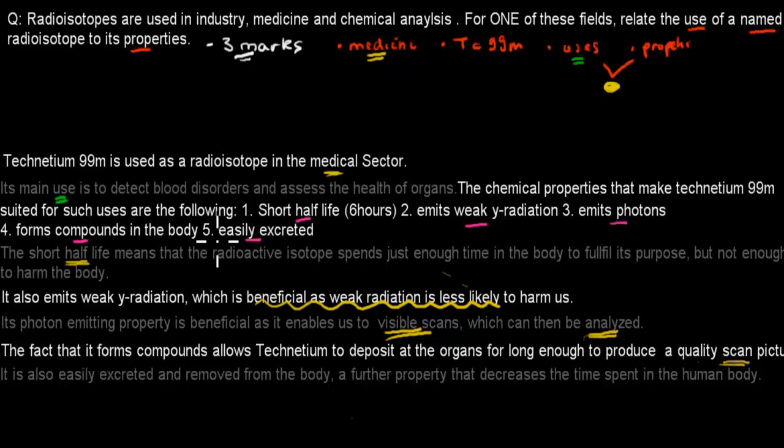And last, the fifth one was it's easily excreted. It's also easily excreted and removed from the body, a further property that decreases its time spent in the human body. We want to have a radioactive isotope which is less likely to harm us and spends the minimum time possible in our body.